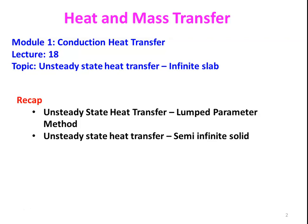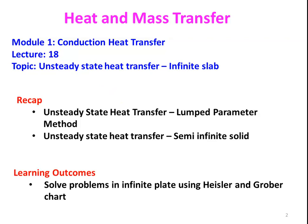We recap from the previous lecture. In the previous two lectures we discussed the unsteady state heat transfer. Earlier we discussed the lumped parameter method and semi-infinite solid. For solving the unsteady state or transient heat transfer problem, we have some approximations in the lumped parameter method and semi-infinite solid. Now, we are going to solve the infinite slab, considering the real-time solid using the chart. The two charts which are very popular for solving unsteady state problems are the Heisler chart and Grober chart.